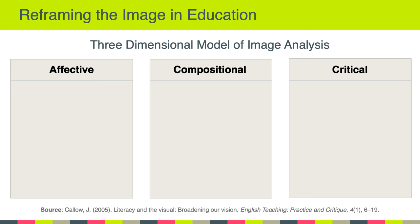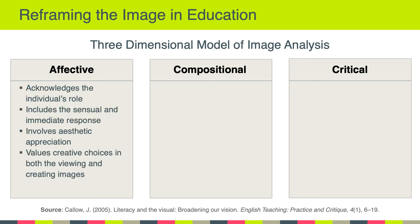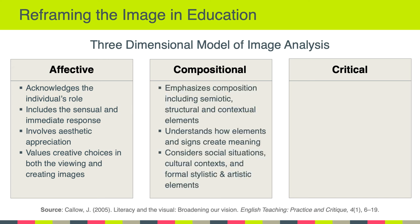At this point Callow introduces his three-dimensional model of image analysis. He argues that if we really want to prepare people to live in a visual society, they're going to need to be able to analyze visual content from three perspectives: the affective, the compositional, and the critical. The affective perspective acknowledges the individual's role — it includes the sensual and immediate response an individual might have when viewing a visual artifact, involves aesthetic appreciation, and values creative choices in both the viewing and creating of images. The compositional dimension emphasizes composition including semiotic, structural, and contextual elements, understanding how elements and signs are put together to create meaning, considering social situations, cultural contexts, and formal stylistic and artistic elements.